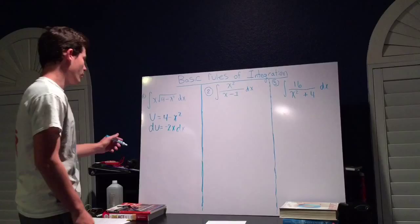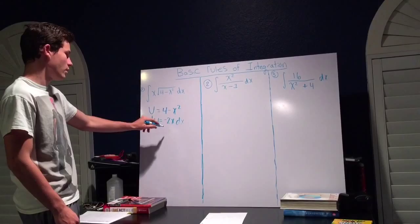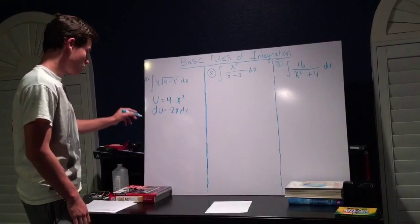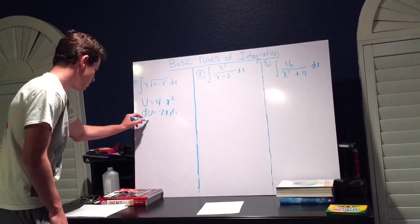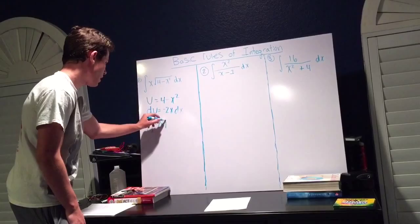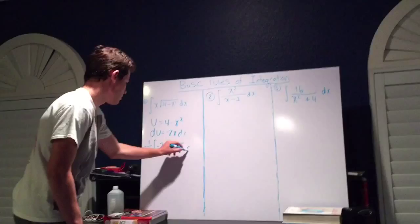Now we're going to substitute for what we have. First we notice that we have for du negative 2x, and in the problem we only have x. So we're going to adjust the inside by negative 2, which means we have to adjust the outside by negative 1 half. So we're going to rewrite the problem as negative 1 half times the integral of negative 2x times the radical of 4 minus x squared dx.